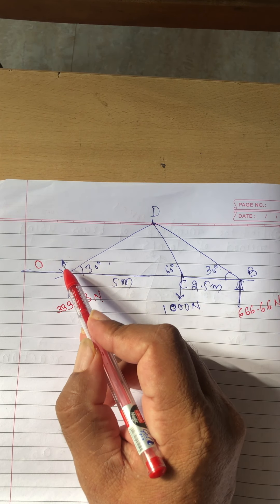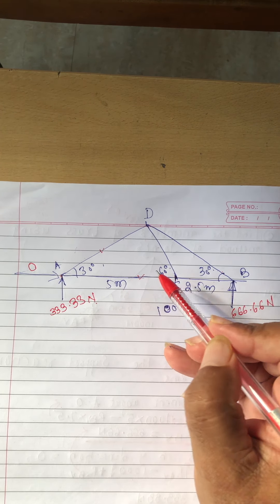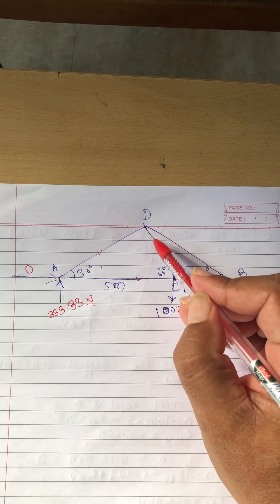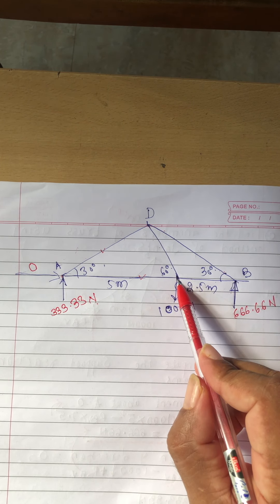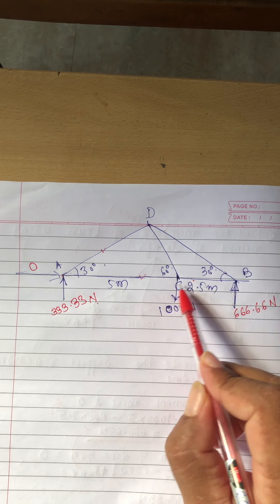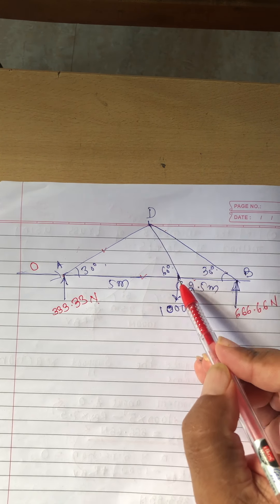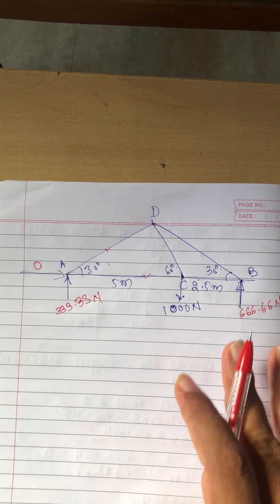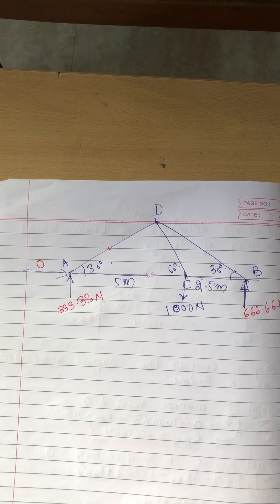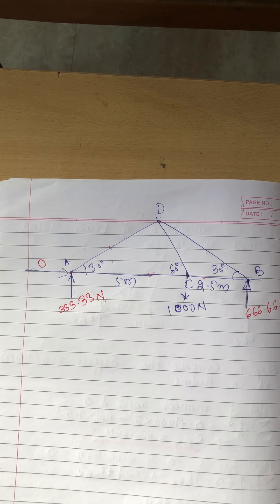Summary: if you go to joint A, you will come to know the values of AD and AC. Next, if you go to joint D, two unknown members are there — DC and DB. Or if you go to joint B, two unknown members are there. The rule is: whenever you consider the FBD of any joint, the maximum number of unknown member forces at that joint must be two. If it is more than two, you cannot attempt the problem.